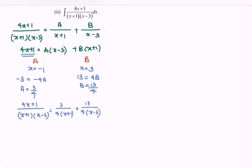So integrate the situation. We will have integrate 3 over 4, 1 over x plus 1, dx, plus we have 13 over 4, integrate we have 1 over x minus 3 respect to x. So continue, 3 over 4 ln x plus 1, plus 13 over 4 ln we have x minus 3, plus c.